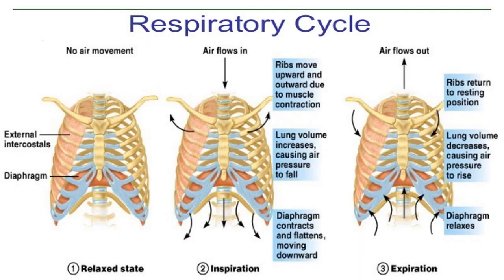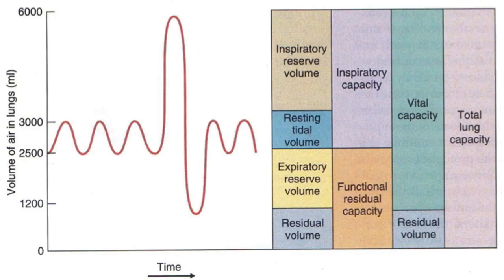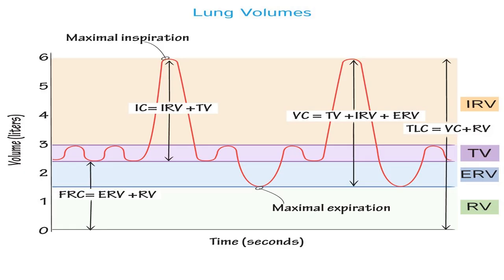When we inhale we take in atmospheric oxygen, and when we exhale we send out carbon dioxide from the body. The volume of air in the lung varies at each stage of the respiratory cycle. Lung volumes, also known as respiratory volumes, refer to the volume of gas in the lungs at a given time. Lung capacities are derived from a summation of different lung volumes. The average total lung capacity of an adult human male is about six liters of air.